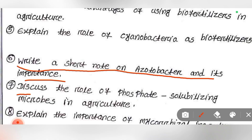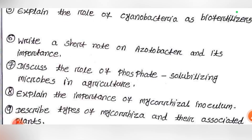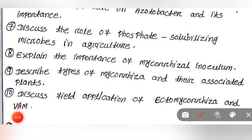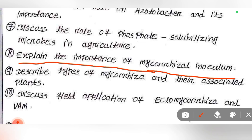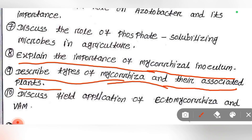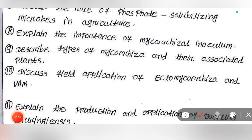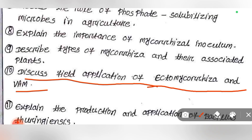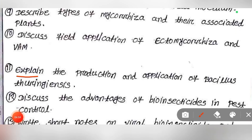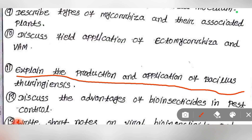Discuss the role of phosphate solubilizing microbes in agriculture. Explain the importance of mycorrhizal inoculum. Describe types of mycorrhizal and their associated plants. Discuss field application of ectomycorrhizal and VAM. Next, explain the production and application of Bacillus thuringiensis.